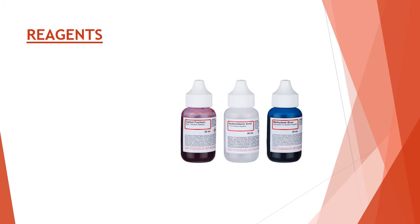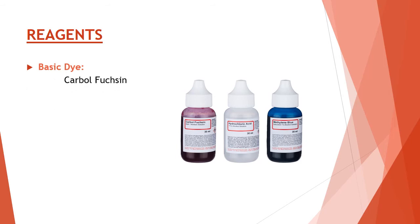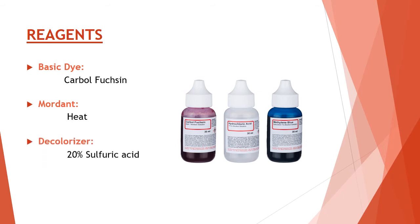Reagents of acid-fast staining include the basic dye carbolfuchsin, a mordant to fix the stain — heat is used as the mordant — a decolorizer which is 20% sulfuric acid, and a counter stain of methylene blue or malachite green.